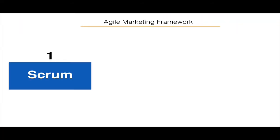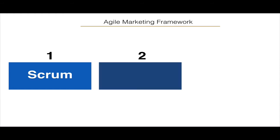Now, the Agile Frameworks. The number one and most popular framework is Scrum. Scrum is so popular that if you make a wrong statement about Scrum, you will get crucified on LinkedIn. So Scrum is a very popular framework with a lot of followers and members. The next popular framework in the context of marketing is Kanban, which is also very popular.